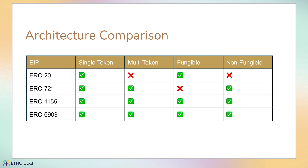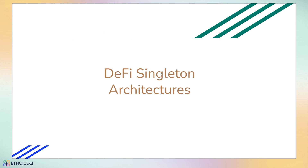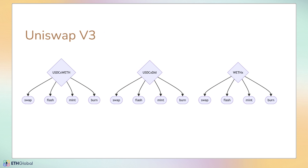As a quick architectural comparison: ERC-20 is a single token, always fungible. ERC-721 is the NFT standard — it can be a single or multiple tokens managed in the same contract, but they're always non-fungible. Token IDs one through six, but there's only ever one of each. ERC-1155 can do basically everything — single tokens, multiple tokens, fungible or non-fungible. ERC-6909 is an iteration on ERC-1155; it's not backwards compatible but functionally they do the same thing.